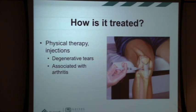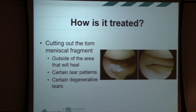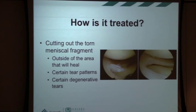Physical therapy and injections into the knee both have the potential to provide significant relief, especially if you have a degenerative meniscal tear associated with arthritis. Regarding the surgical option of cutting out the torn piece — essentially removing that pebble from your shoe — you can see the rough torn edge here, and here's what it looks like after instruments are introduced to bite away at it. If the tear is outside the area that will heal, a certain type of tear pattern, or degenerative tears, those are oftentimes treated with this procedure, and it's done much more commonly.